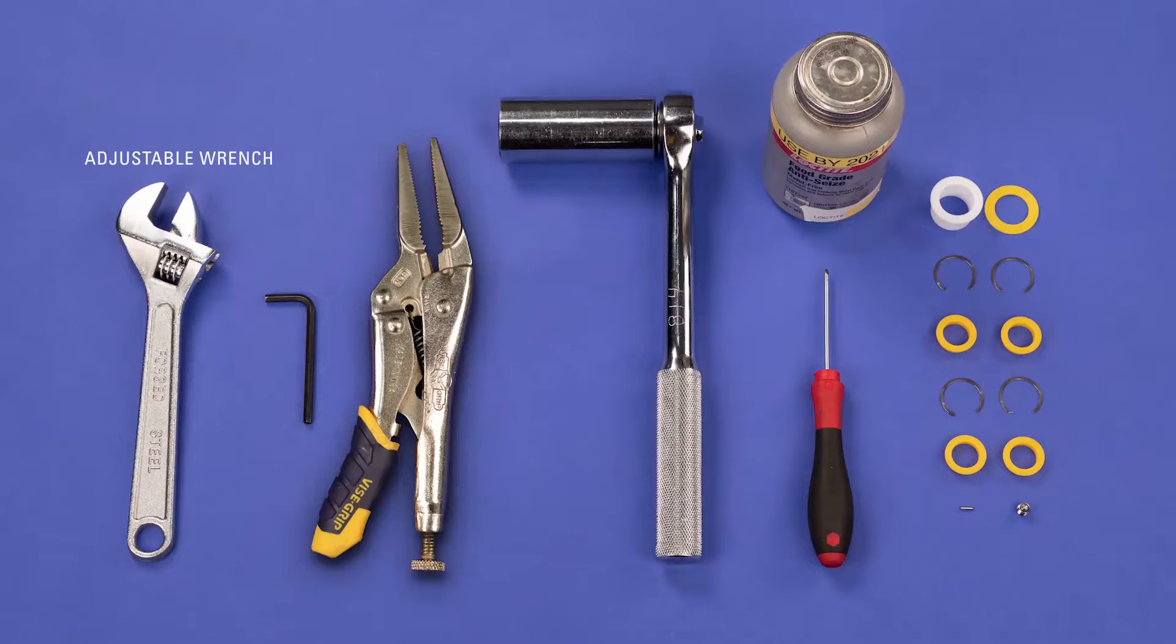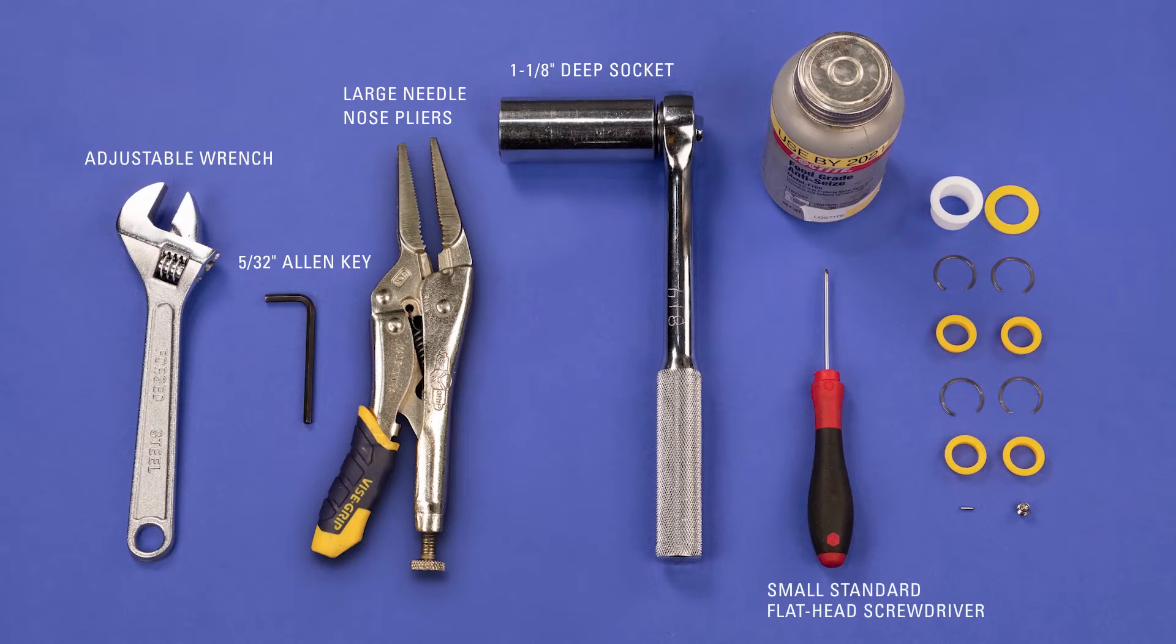To begin, we're going to need an adjustable wrench, a 5/32 inch Allen key, large needle-nose pliers, a 1 1/8 inch deep socket, a small standard screwdriver, thread anti-seize, and a spare parts kit.